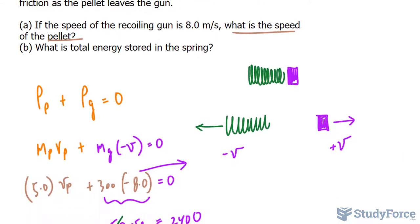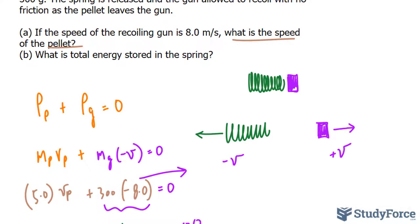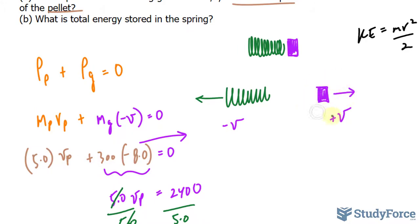And for B, they're saying, what is the total energy stored in the spring? For that, we need to use the kinetic energy formula. If you forgot what it was, it's KE is equal to MV squared over 2.